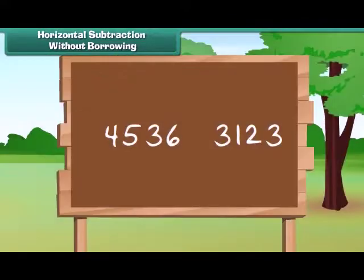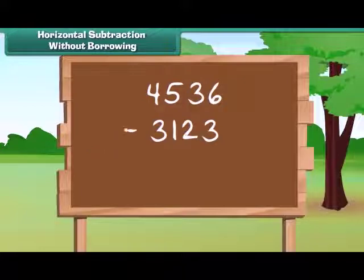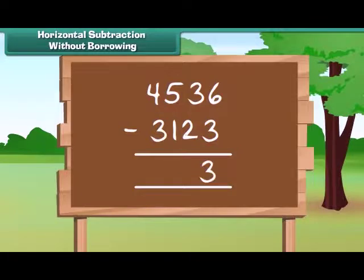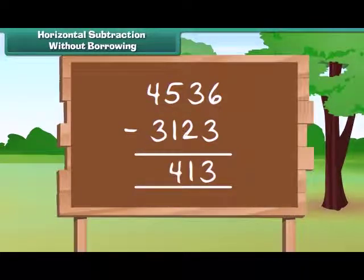We write the bigger number above and smaller number below it. Now subtract the numbers at 1's place, the 10's, next 100's and at last 1000's. Thus, the answer obtained is 1413.